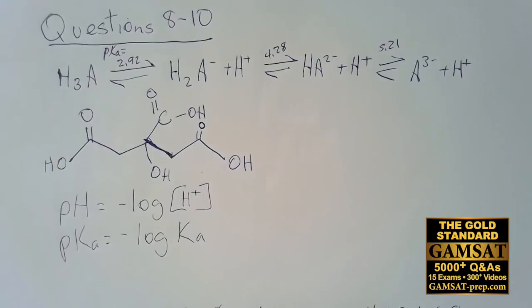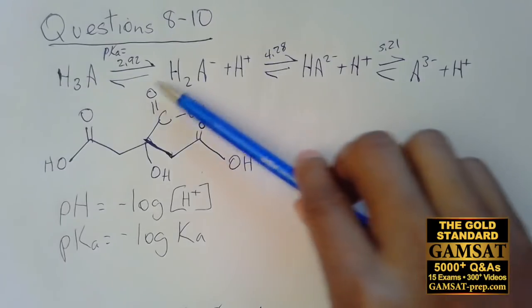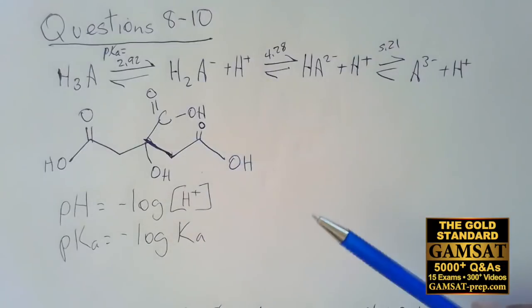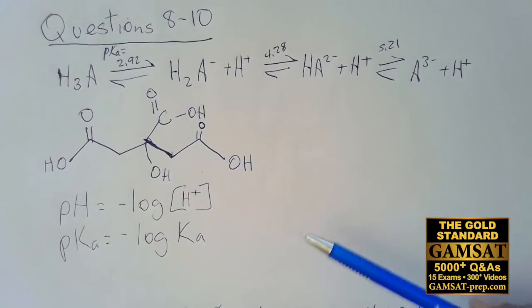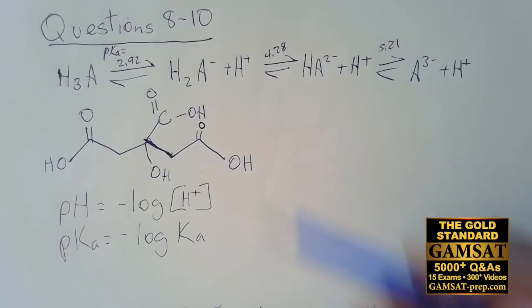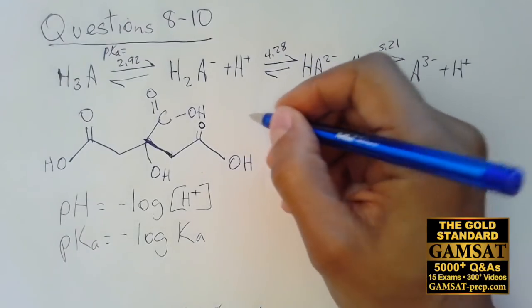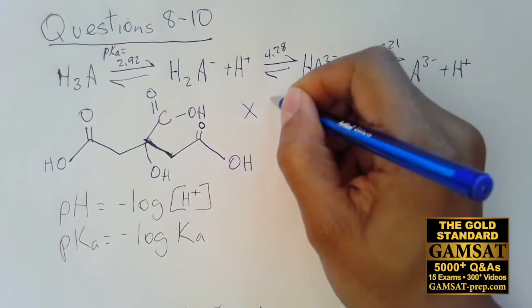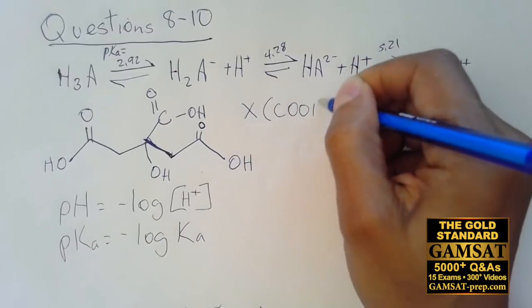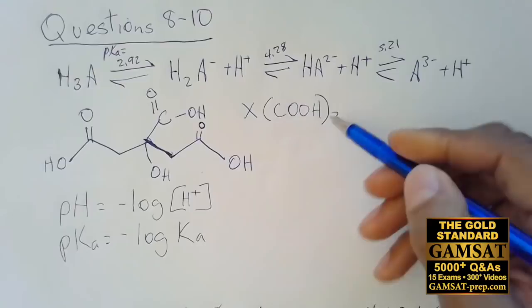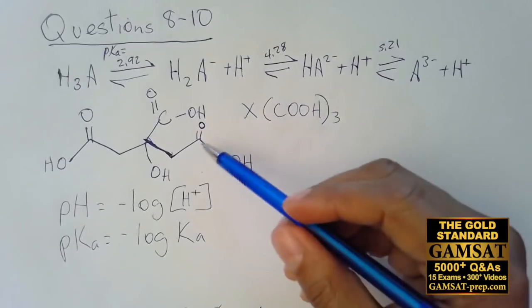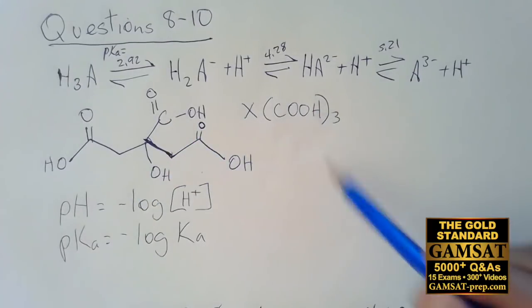Don't worry about it — if it was a question at that level they'll give you suggestions along the way. The important thing is that you see there are three carboxylic acid groups, even if you don't see the full structure. In the information they provide, written as C(COOH)₃, you have three carboxylic acid functional groups present.